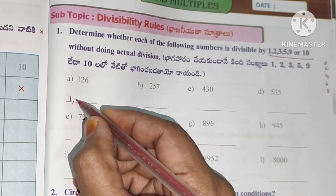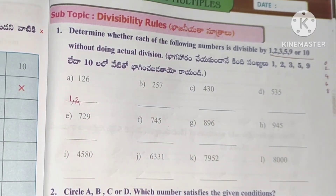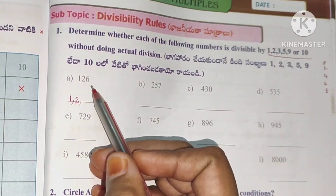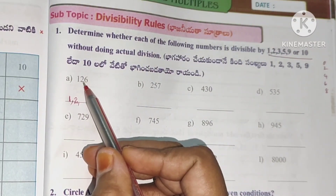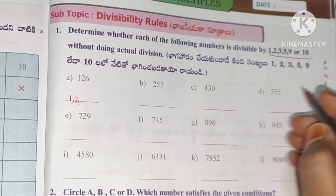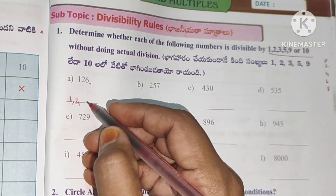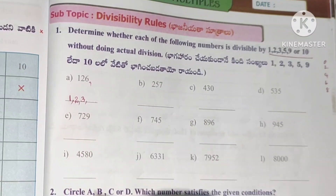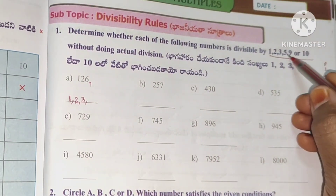Here 6 is there in the units place, so this number is divisible by 2. For divisibility by 3, find the digital root: 1 plus 2 is 3, 3 plus 6 is 9. So it is divisible by 3. And 9 is divisible by 9 as well. It is divisible by 5.